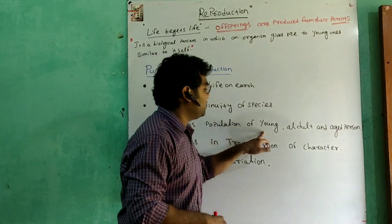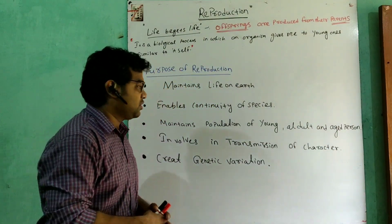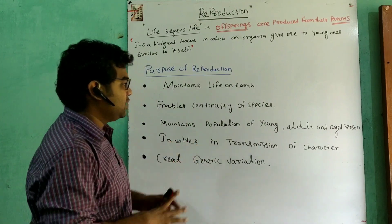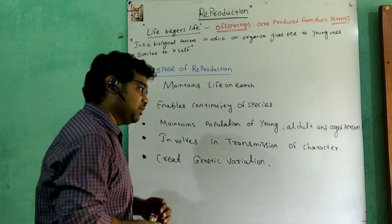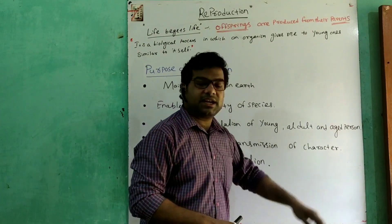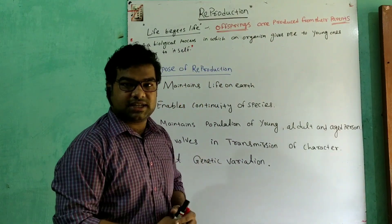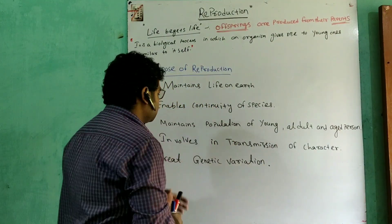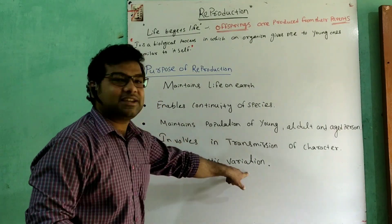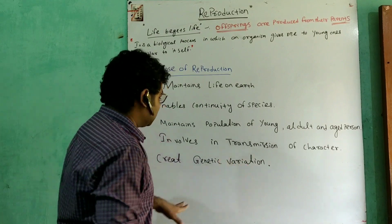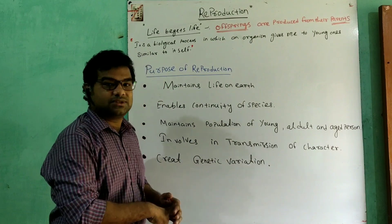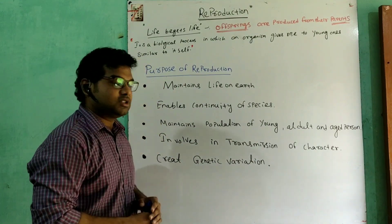The third purpose is it maintains the population of young, adult, and aged persons. The fourth purpose is reproduction involves transmission of characters from parent to the next generation. The fifth purpose is it creates genetic variation.